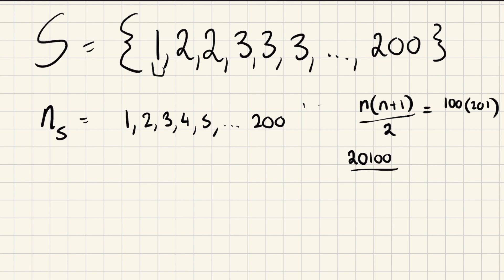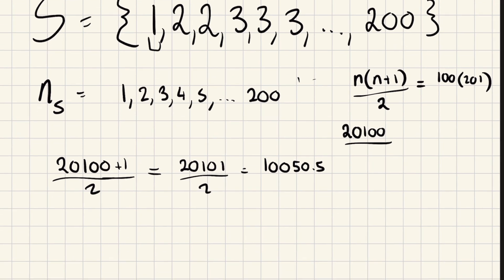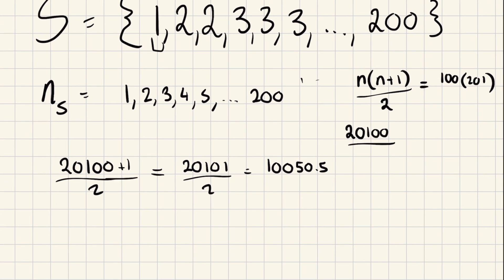So now we know that there are 20,100 values in here in total. We need to find the middle value, so to do that you have to add one and then divide by two. What is that going to give us? Well, we're going to have this divided by two, which is going to be 10,050.5. So we're looking for the 10,050.5th element.